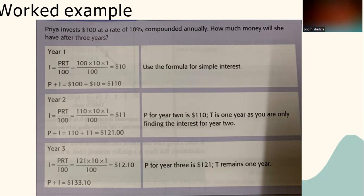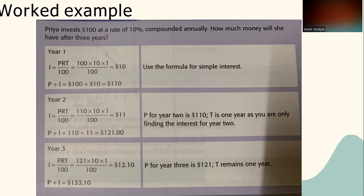Continuing: after Year 2, Principal + Interest = 110 + 11 = $121. Year 3: I = 121 × 10 × 1 / 100 = $12.10. So for Year 3, Principal + Interest = 121 + 12.10 = $133.10. This is the total amount after three years of compound interest.